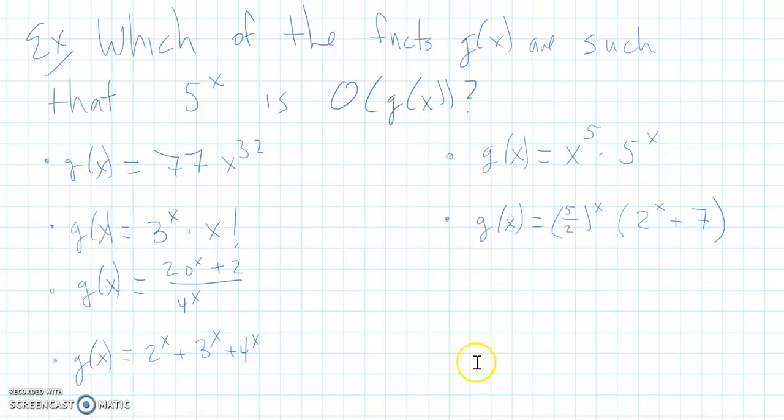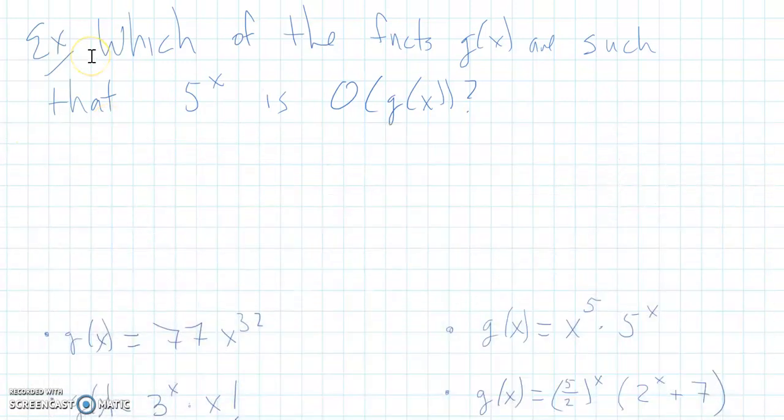So which of the functions g of x, and I have 1, 2, 3, 4, 5, 6 listed here, which of these are such that 5 to the x is big O of g of x? Now before I start, I want to point out one definition and two important facts.